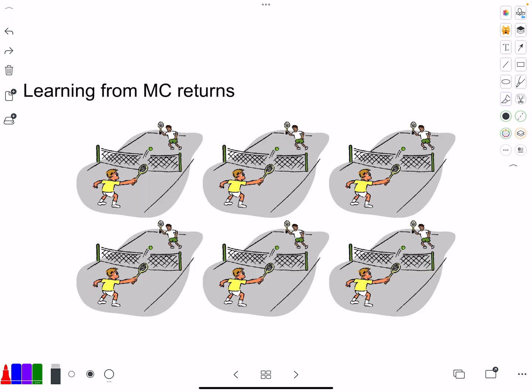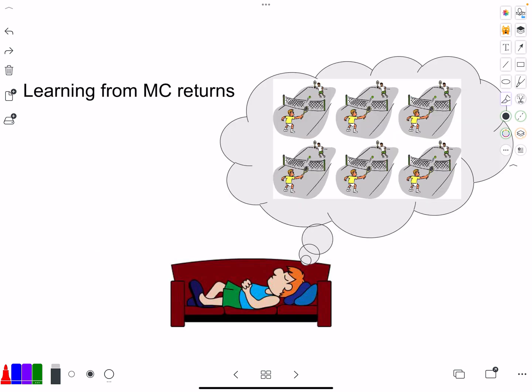So again, Monte Carlo return will look something like this. You play a bunch of matches. You have to play to the end. And then later when you are doing your training process, when you're sleeping at home, you're going to say, well, the matches that I won, I need to do more of that. The ones that I lost, I need to do less of that. Whatever it is that happened inside of those matches, I need to change that thing or I need to do more of it.